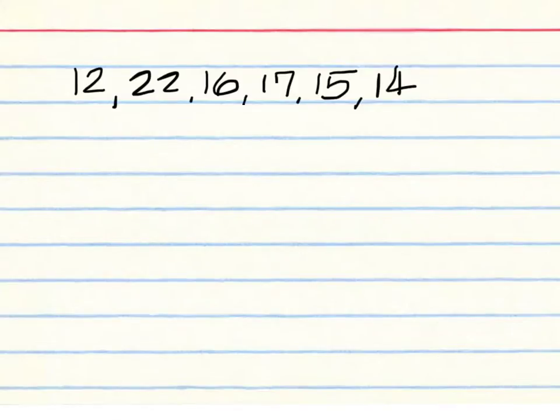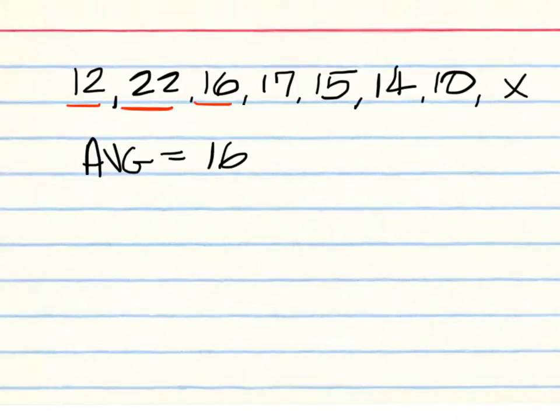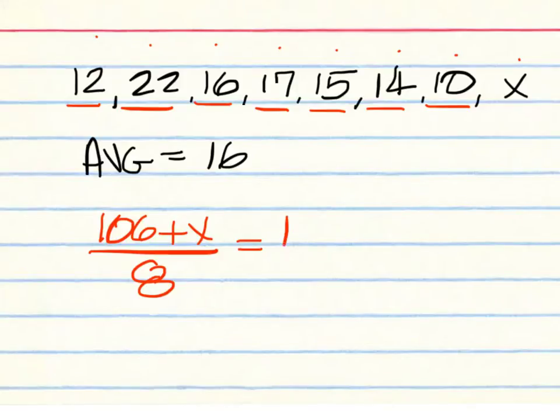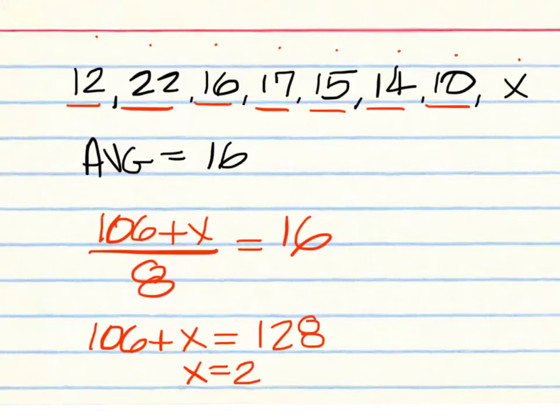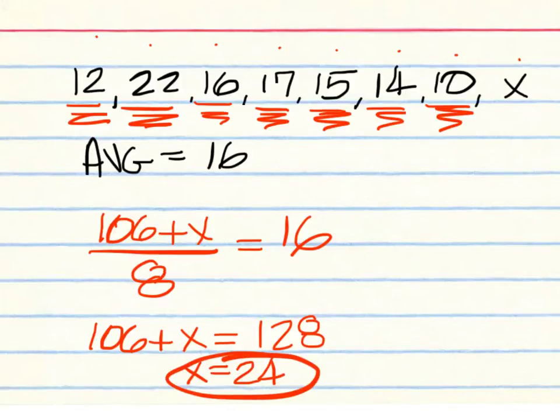Another practice problem. This one is 12, 22, 16, 17, 15, 14, 10, and X. The average we are looking for is going to be 16. For the solution, we have 12, 34, 50, 67, 82, 96, 106, plus X. And we have 1, 2, 3, 4, 5, 6, 7, 8 numbers. And we want the average to be 16. So, that's 106 plus X will equal 128. So, you should have 24 for the answer. Terrible mistake. That's not 24. That should be 22. My fault.